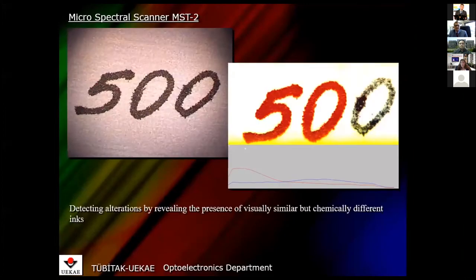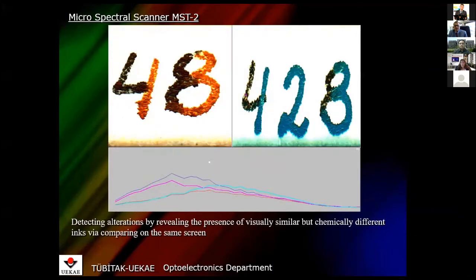These are examples of detecting alterations and additions by revealing the presence of virtually similar but chemically different inks. Even if chemically different inks are visually similar, wonderful work can be done using multispectral imaging — including via comparison on the same screen.